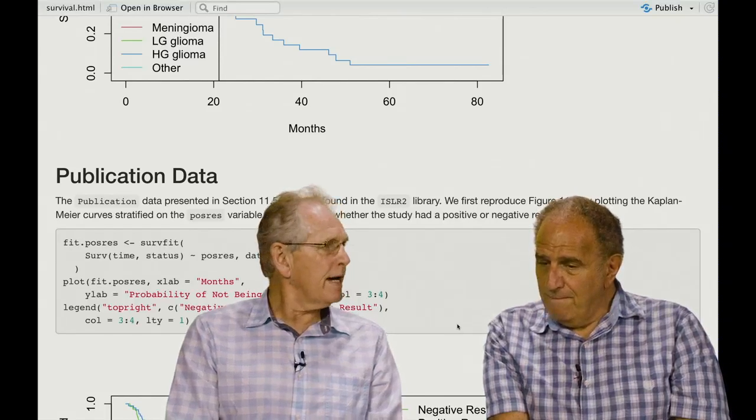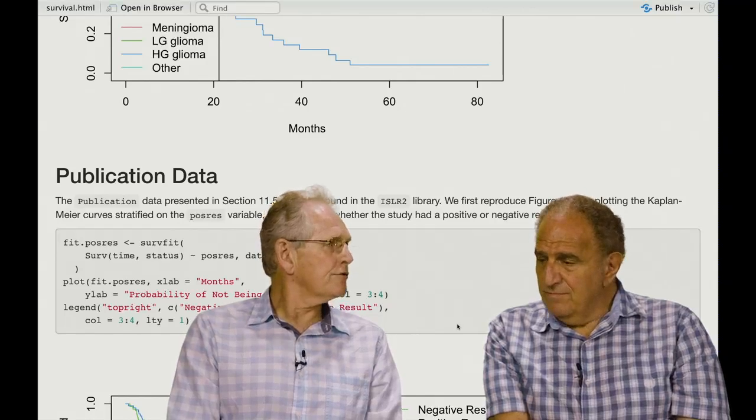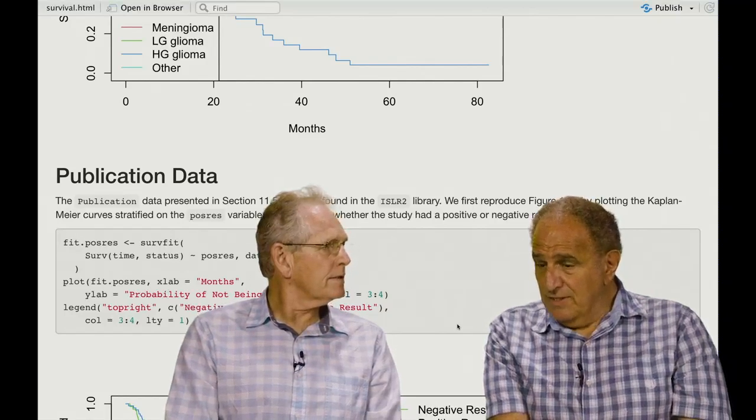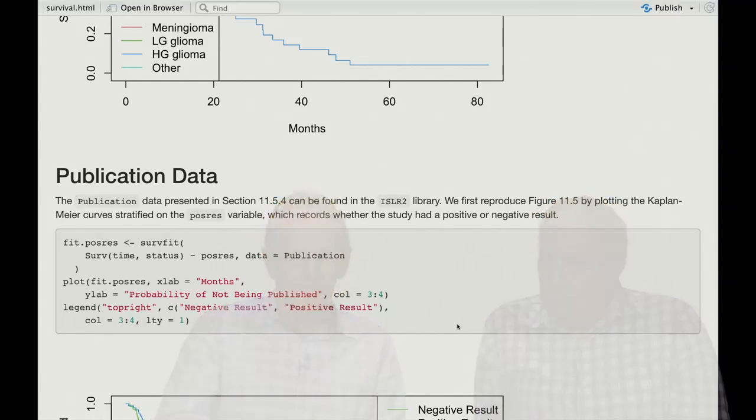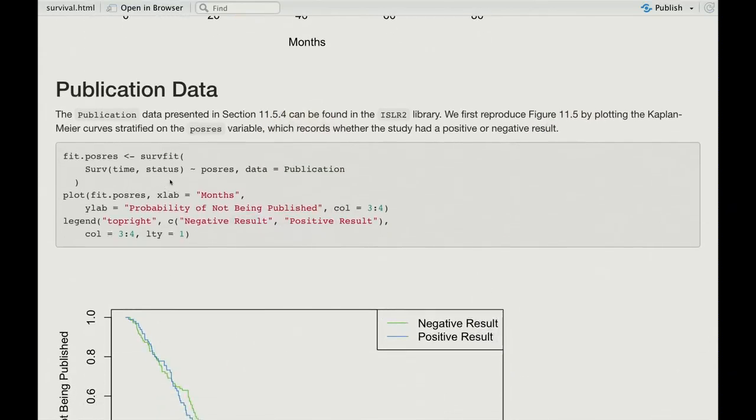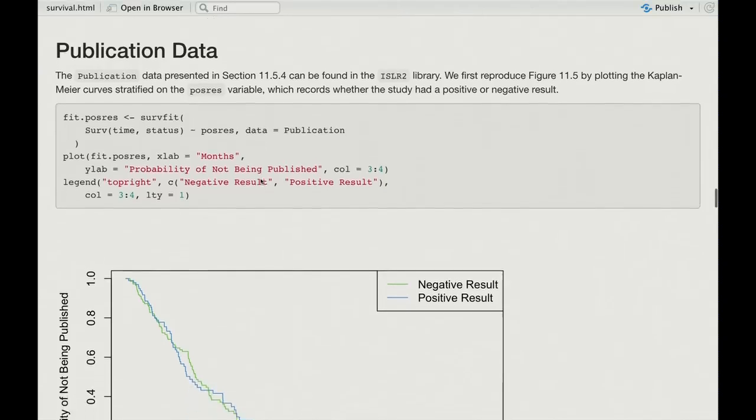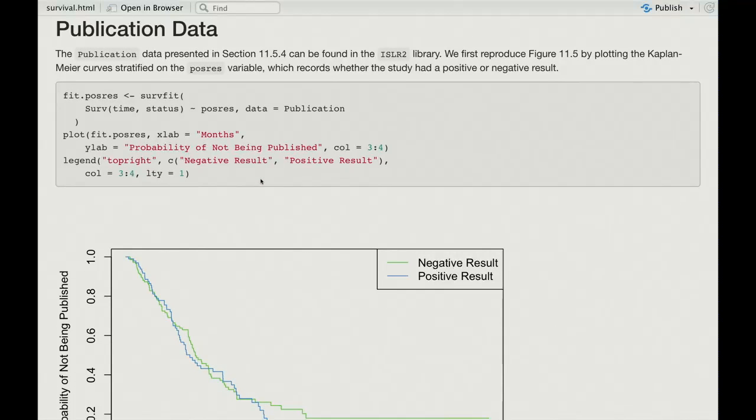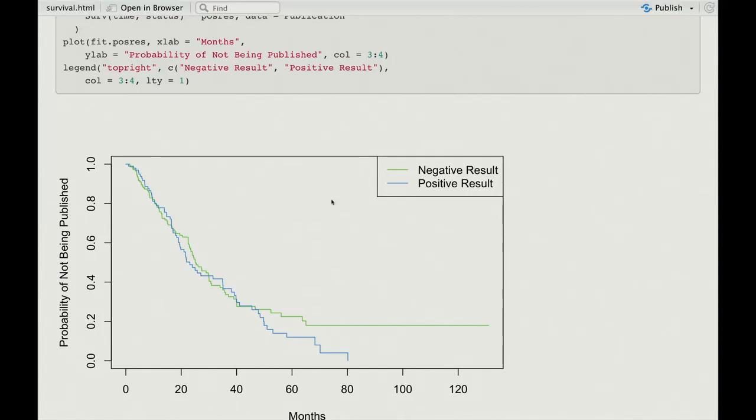So I guess this speaks to the bias in published clinical trial and medical papers. It's trying to examine whether there is such a bias. The incantation is pretty much the same. We've got time and status. The status variable here is whether or not it was published. In this case, publication date is the endpoint. It's a positive outcome if it's published. Pos res is whether the result in the study was positive or not, and that's the binary predictor in this case. And we produce a Kaplan-Meier curve for that, stratified by negative or positive.